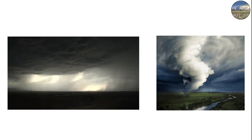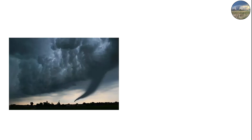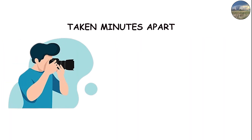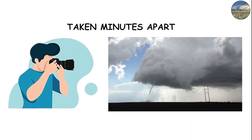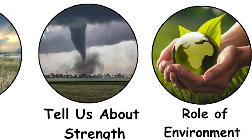The balance of updrafts, downdrafts, and inflow strength drives these changes. When the inflow weakens or the storm's energy shifts, the tornado loses stability and its shape distorts. Photographs taken minutes apart often show completely different forms, which is why storm chasing requires experience and constant attention to detail.